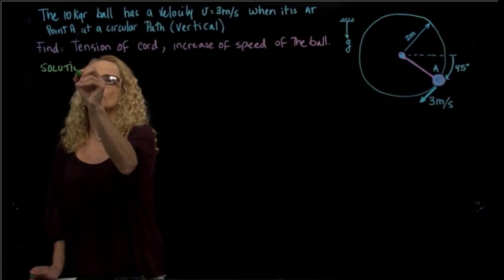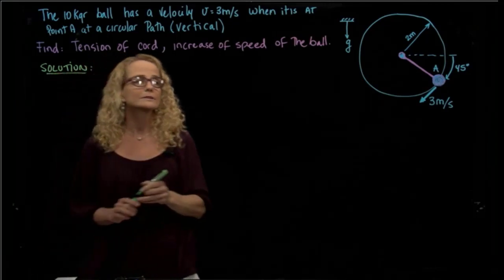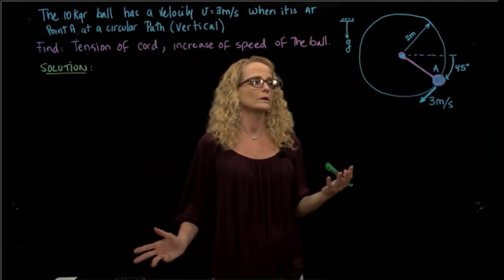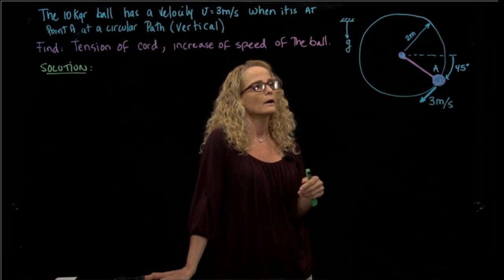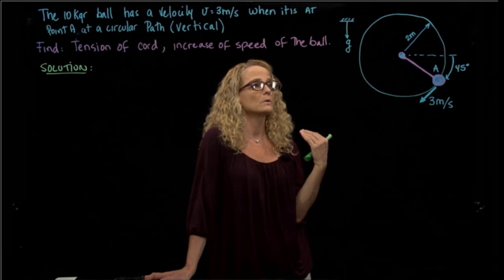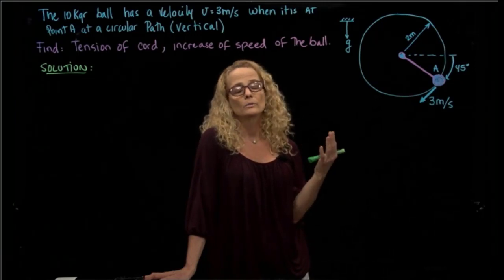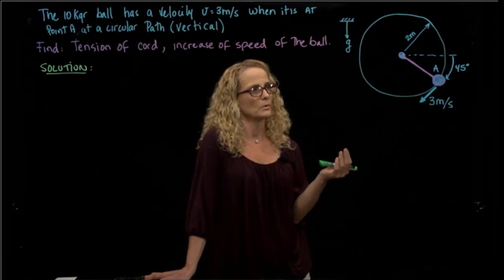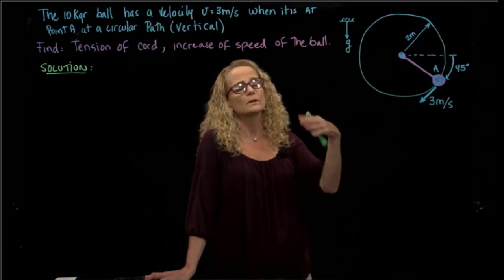Solution. First of all, we have to decide which kind of coordinates we want to use. If you recall from the theory, we talk about rectangular components or tangent and normal components or cylindrical components. While this is a circular path,